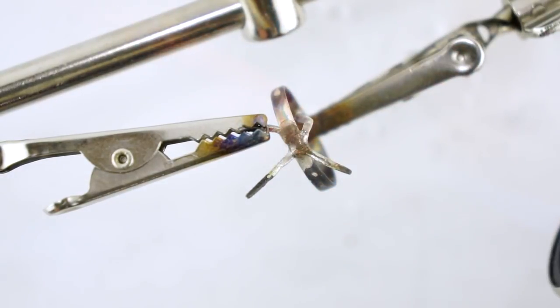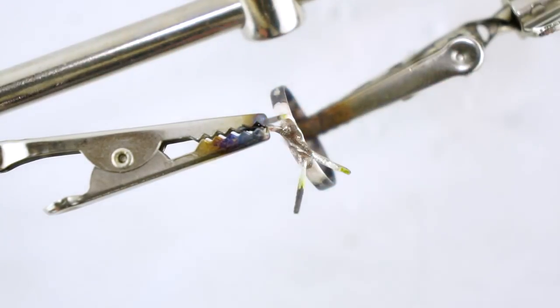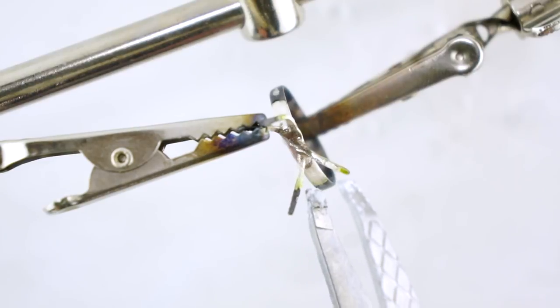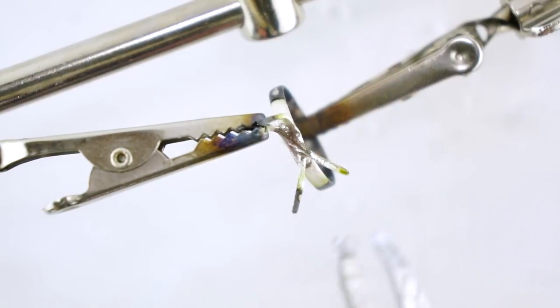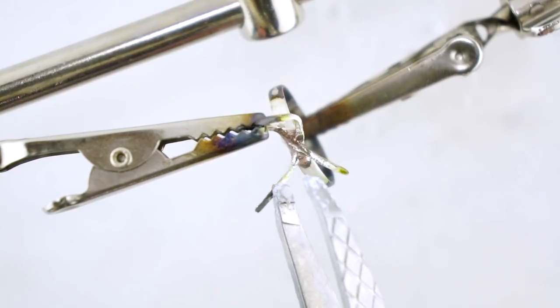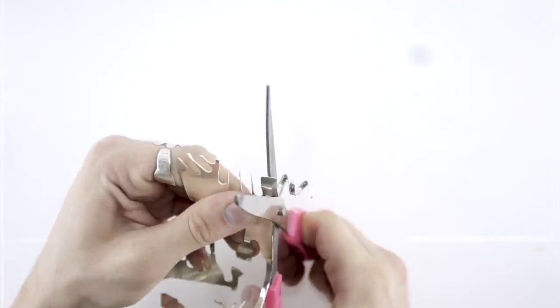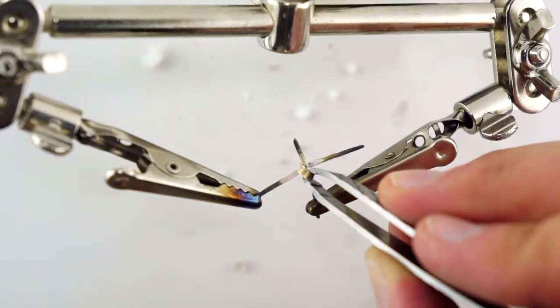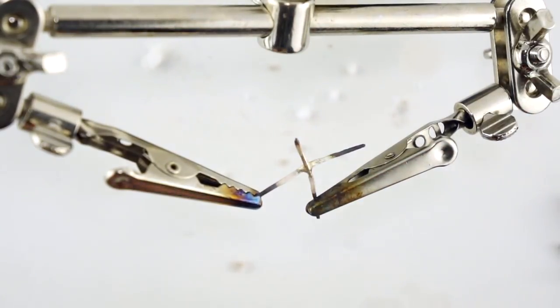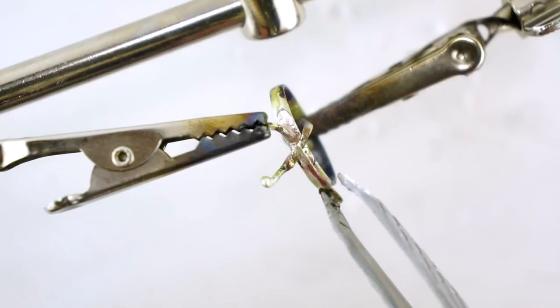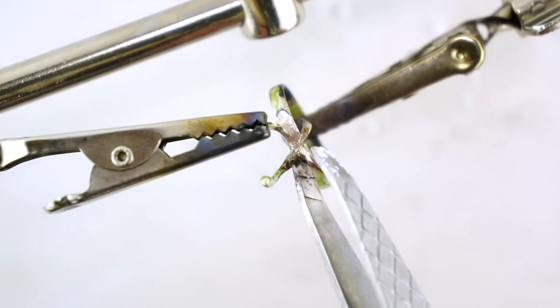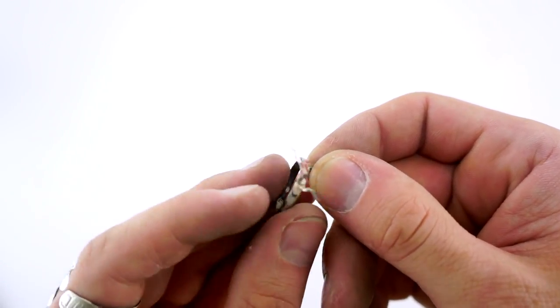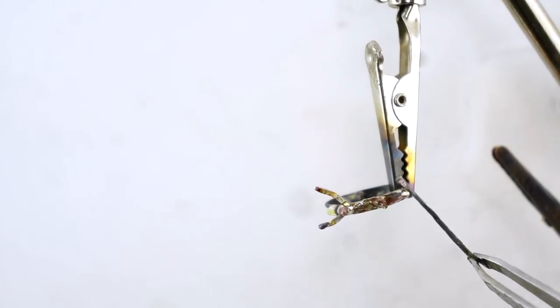But when I tried it, the prongs came unsoldered. So, if we rewind a bit, I'll show you what went wrong. Back here when I was putting on the solder that was supposed to be hard, it was actually easy. So then when I tried to solder it to the band with easy, it just melted and came apart. Trying to fix that, I broke it even more. So I decided I was just going to start over. And burn my table.